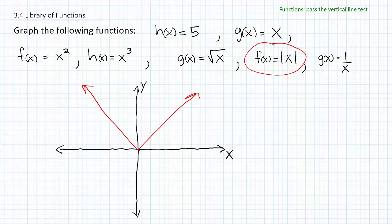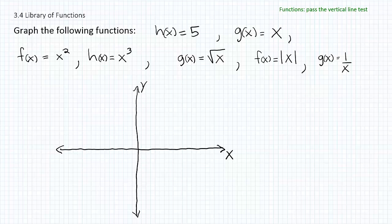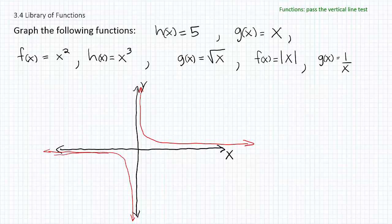Any function whose predominant piece is the absolute value of x will have a shape similar to this. Lastly, we have g of x equals one over x. This is a peculiar function where as we get close to zero, we end up with an asymptote — you can't put zero into the function because one over zero is undefined. As you get close to zero, things start to look unusual. Also, if x is very large like infinity, one over x approaches zero. So expect the graph to do something like this on one side, and something like this on the negative side.